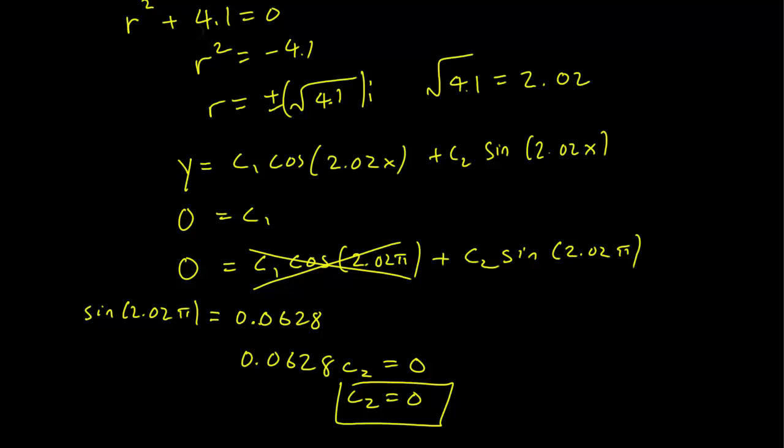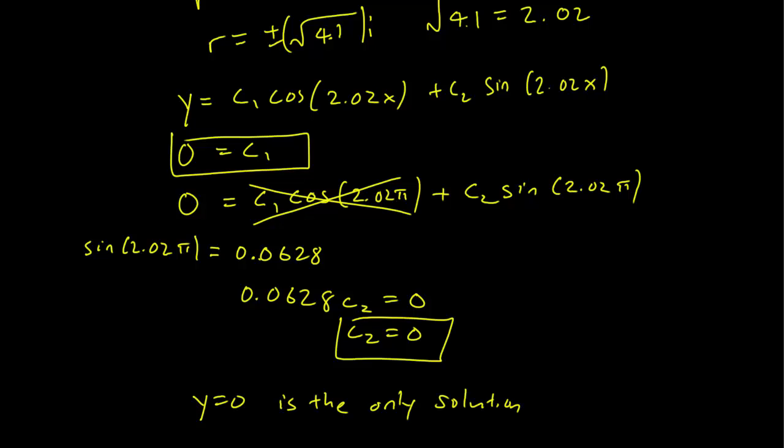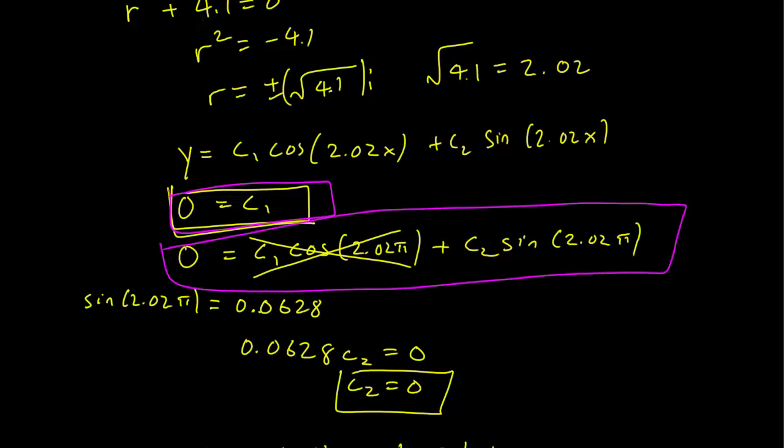So we do have just a single solution, y equals 0. And this stemmed from the fact that our two equations were not the same this time. So we had c₁ = 0, and c₂sin(2.02π) = 0.